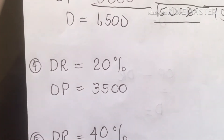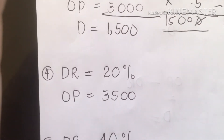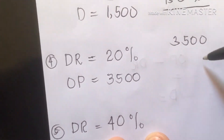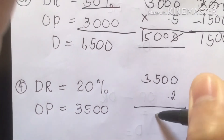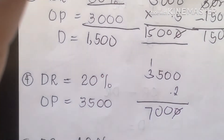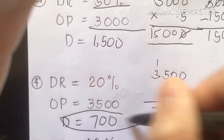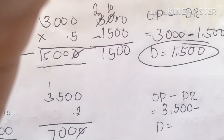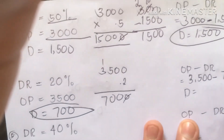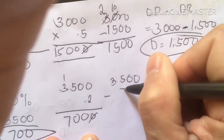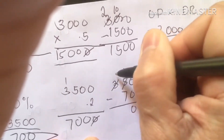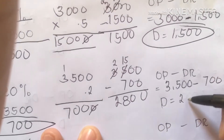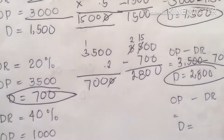Let's proceed to number 4. We have a discount rate of 20% and the original price of that particular cell phone is 3,500. Here we go: 3,500 times 20% (0.2). Our discount is 700. Don't forget to write the original price — OP — to avoid confusion. Subtract 3,500 minus 700: 5 becomes 15, 3 becomes 2, 15 minus 7 is 8, 2 minus 0 is 2. Our payable amount is 2,800.